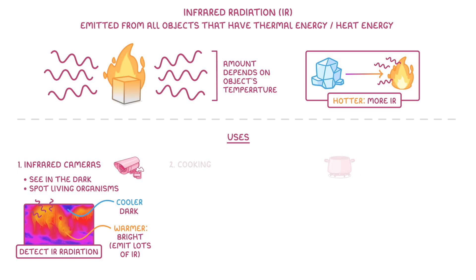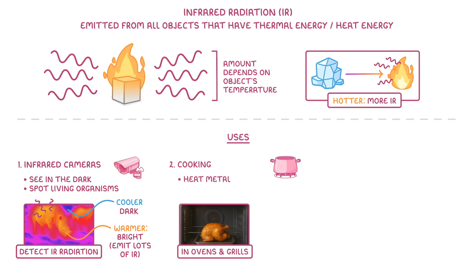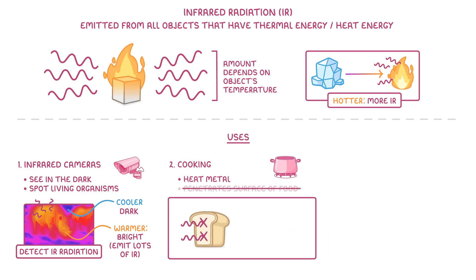Another use is in cooking. By heating metal to very high temperatures, like in ovens and grills, we can make the metal emit lots of infrared radiation, which can then heat our food by transferring the heat energy, causing it to cook. Unlike in microwaves though, infrared radiation doesn't penetrate the surface of the food, which is why bread toasts in a toaster, rather than just getting generally warmer like it would in a microwave.